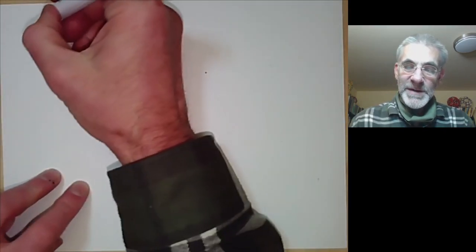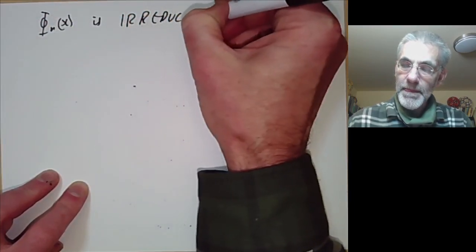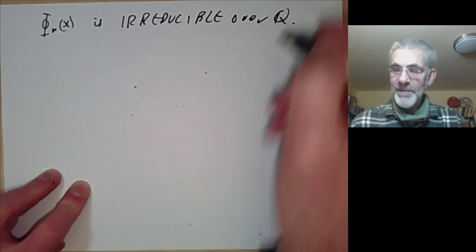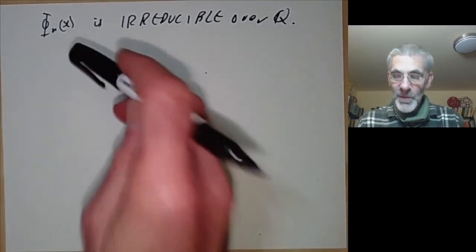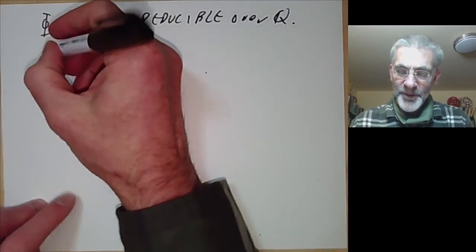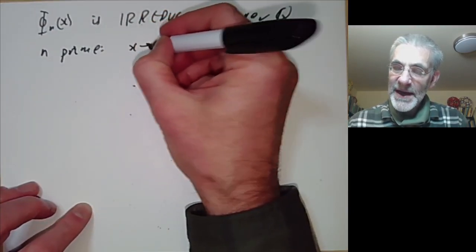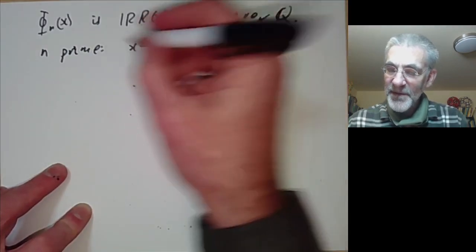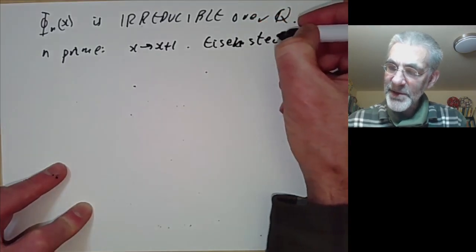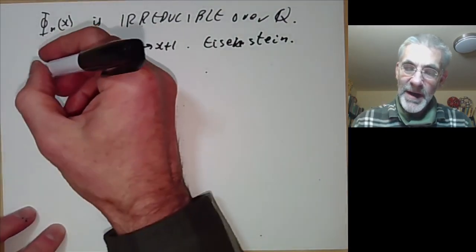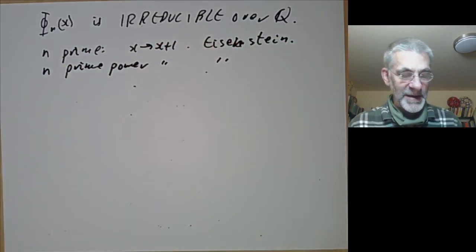A really fundamental property of φ_n(x) is that it's irreducible over the rationals. In general it's not irreducible — for example, over finite fields it has a strong tendency to factorise into smaller things — but over the rationals it's irreducible. For n prime there's a well-known proof: if you change x to x+1, then φ_n(x) becomes an Eisenstein polynomial, so we can apply the Eisenstein criterion. This also works for n a prime power.